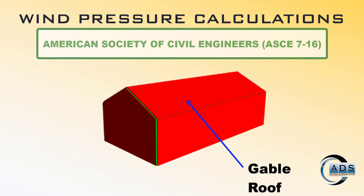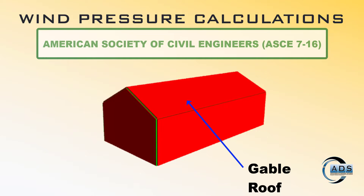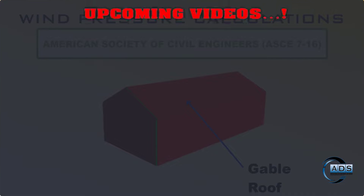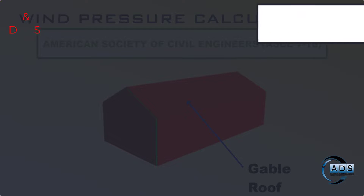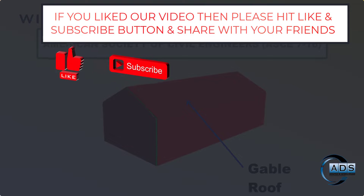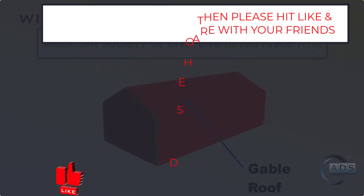This ends example problem 3. A simple structure was used to explain things more clearly. Later, a video will be added to the analysis and design playlist showing how to assign these loads in analysis software. In the next videos we will see different structures for calculating wind load pressures. I hope this example gives you a better understanding of calculating wind loads using ASCE 7 specifications. If you liked the video, please hit like and subscribe and share with your friends — comment below for your desired content.